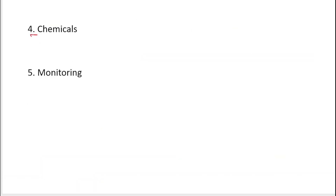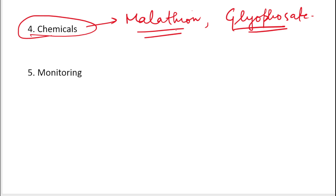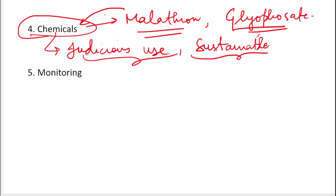We can also use chemicals such as Malathion and Glyphosate as pesticides. However, we should always use these chemicals judiciously — that is, with sustainable use — because using too many chemicals is not good for our environment. Generally in IPM, chemicals are kept as a last resort. When cultural and biological practices do not work properly, we go to chemical practices to fight and kill the pests and protect our crops.